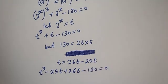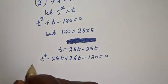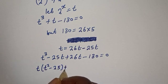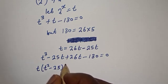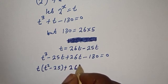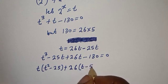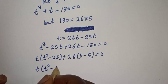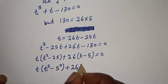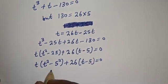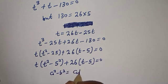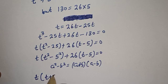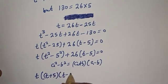We have t cubed plus 26t minus 130 equals zero. Here t is common, so we factor: t bracket t squared minus 25, plus 26 bracket t minus 5, equals zero. This becomes t bracket t squared minus 5 squared, plus 26 bracket t minus 5, equals zero. Using the identity a squared minus b squared equals a plus b times a minus b, we get t bracket t plus 5 multiplied by t minus 5.